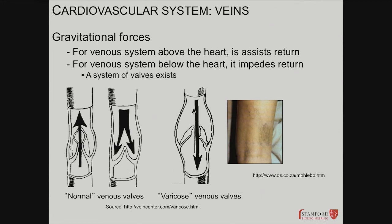Venous valves address gravitational forces. Blood goes down easily, but for blood to come up from the legs back to the heart without regurgitating, there must be valves that prevent it from flowing back down — otherwise we can't maintain the closed-loop pump. In disease states and older people, these valves become leaky or incompetent. When the valve fails, blood starts flowing back down, expanding the venous reservoir in the legs and storing a lot more blood there.